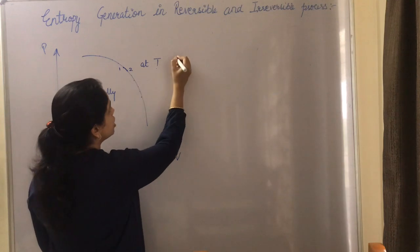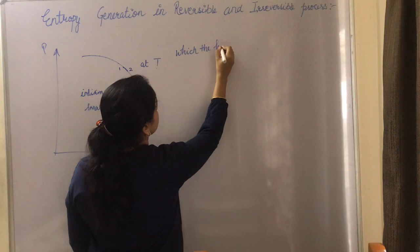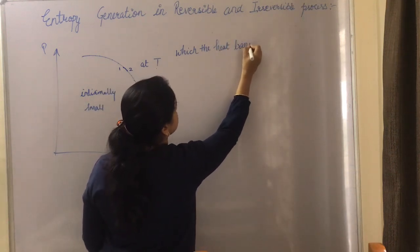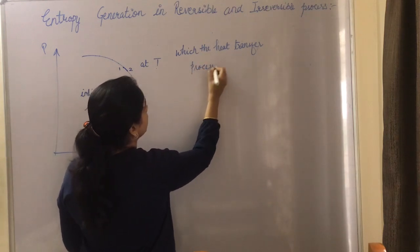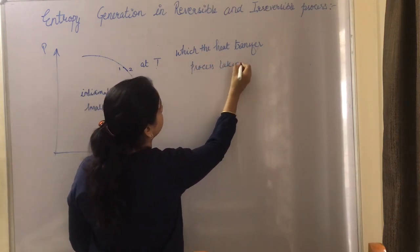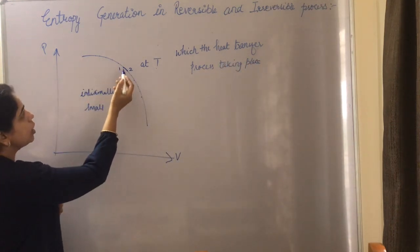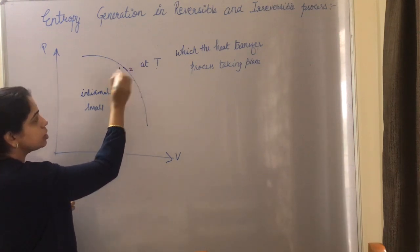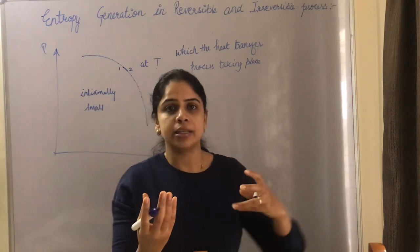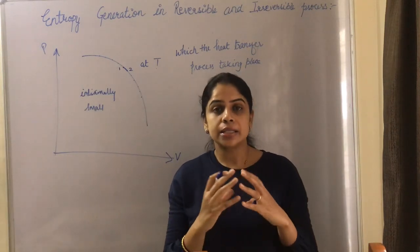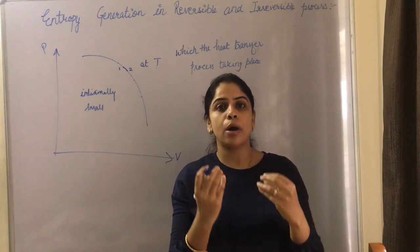T is the temperature at which the heat transfer process is taking place. Now we add some heat to this reversible process, and the heat absorbed or rejected by the system remains the same, because an infinitesimally small amount of heat is added to the system.